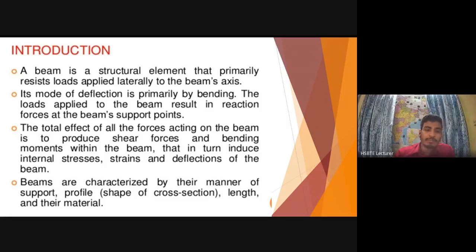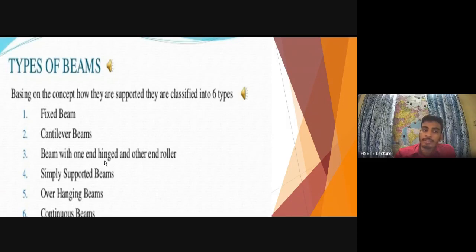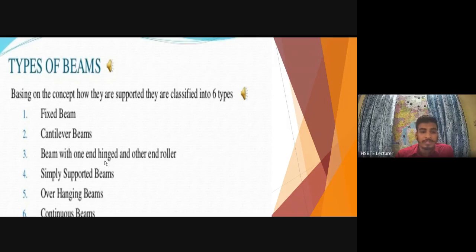These are the types of beams. Beams are classified into six main types: the first is the fixed beam, the second is the cantilever beam, the third is the beam with one end hinged and the other end roller, the fourth is the simply supported beam, the fifth is the overhanging beam, and the sixth is the continuous beam.